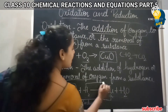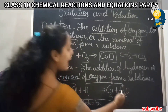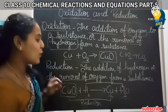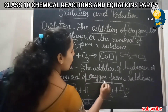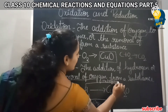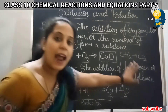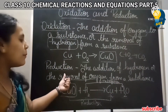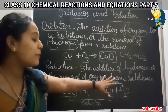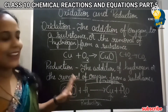Now look at hydrogen in this same equation — oxygen is added to hydrogen, forming water. So addition of oxygen is called oxidation. Reduction can be defined in two ways: either by adding hydrogen, or by removing oxygen. If you add hydrogen — that is reduction. If you remove oxygen — that is also reduction.